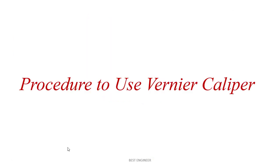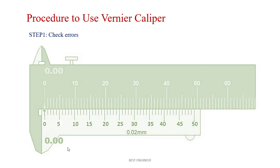Let me see the procedure to use vernier caliper. Step 1: We have to check the error — whether the main scale and vernier scale are coinciding at 0 or not. Suppose there is a positive error, we have to reduce the amount of error from the final value. Suppose there is a negative error, we have to add the value of error to the final value.